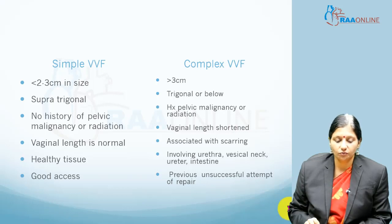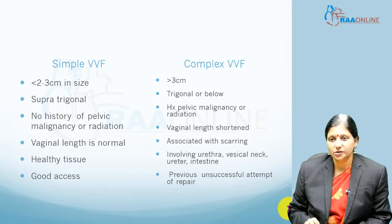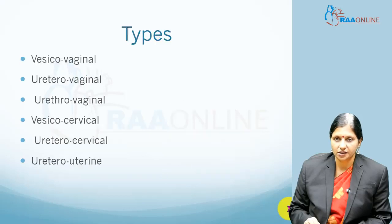In complex vesico-vaginal fistulas, they are usually large — more than 3 cm. They involve the trigone or lie below it. The patient can give a history of malignancy or radiation. The vaginal length is short and they are associated with scarring. They can involve the urethra, bladder neck, ureter, and intestine, and there may be a previous attempt at repair.